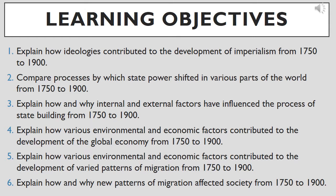At the end of this presentation, you will be expected to demonstrate your understanding of six learning objectives: 1. Explain how ideologies contributed to the development of imperialism from 1750 to 1900. 2. Compare processes by which state power shifted in various parts of the world from 1750 to 1900. 3. Explain how internal and external factors influenced state building from 1750 to 1900. 4. Explain how environmental and economic factors contributed to the development of the global economy from 1750 to 1900. 5. Explain how those factors contributed to varied patterns of migration from 1750 to 1900. 6. Explain how new patterns of migration affected society from 1750 to 1900.